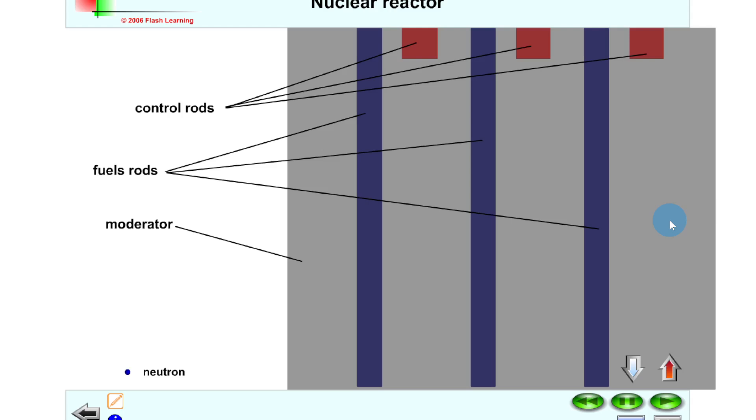But not only can we control the speed of neutrons in the reactions by using moderator material, we can also lower or raise the control rods here in order to absorb or stop some of the neutrons from actually going on and causing more nuclear fission reactions. So we can limit how much nuclear fission is going on and therefore how much energy is released in the reaction. So if I lower the control rods to about here this time and then click play, then you'll notice that one of the neutrons is absorbed at this stage.